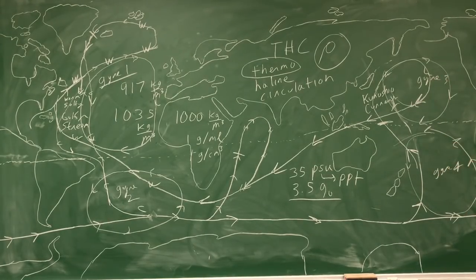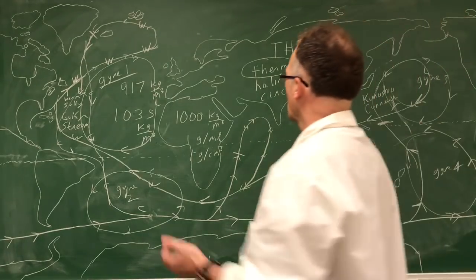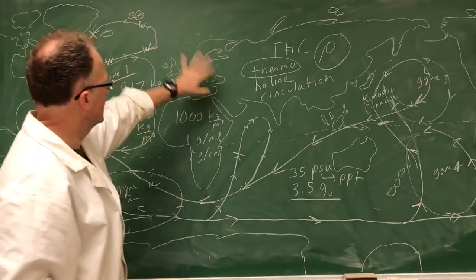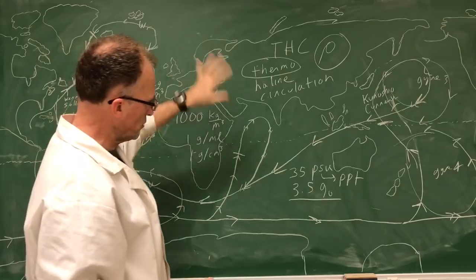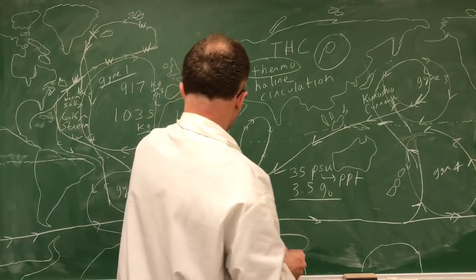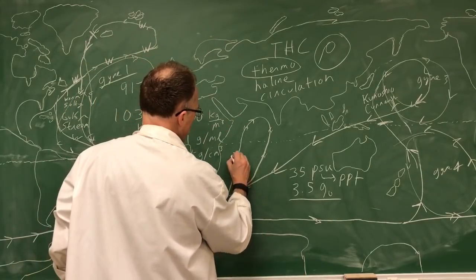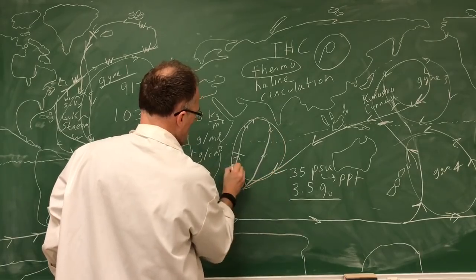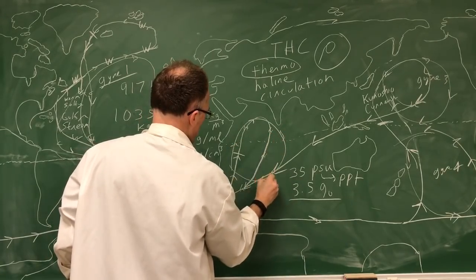Where's the fifth gyre? Any guesses? Up here, ice is there. It doesn't really, I mean, the thing rotates, but right over here, deflects to the right. So we get gyre five.